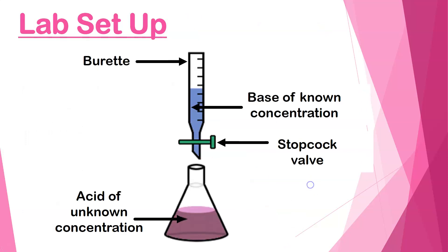Now, the lab setup. During a titration, you use an Erlenmeyer flask that you put your unknown chemical into. You have what's called a burette, which is a long skinny glass tube with a valve on the bottom. You put your known concentration solution in the burette. The one we're going to do will have an unknown acid in the flask and a known concentration of base in the burette. You could do an unknown base and a known acid — it doesn't matter; this is just what we're doing for this activity.